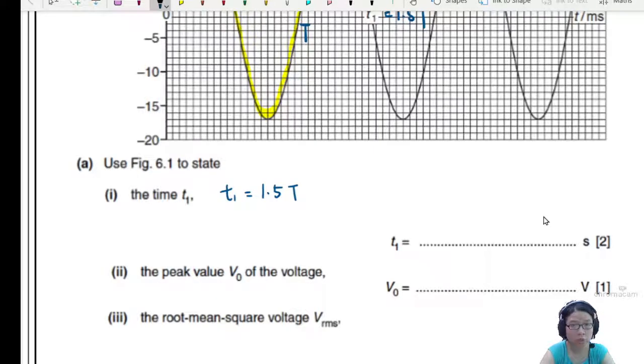But do we know T? Well, we can find T from frequency because T is 1 over F. So this will be 1.5 times 1 over 50 because frequency is 50 hertz. And that will give you the value of T₁. T₁ here would be 0.03. I prefer to write in 2SF because just to be safe.